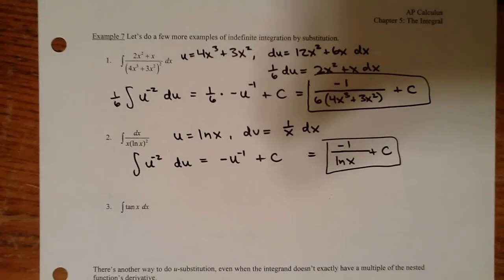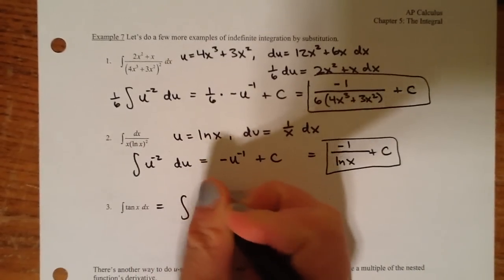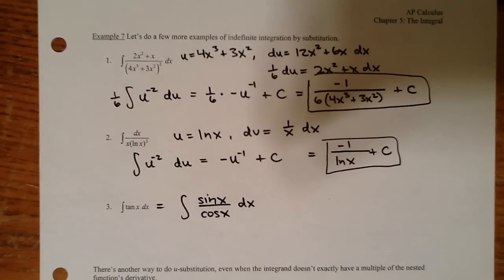So the next one's a little weird — the integral of tangent. It seems like the only option would be tangent, but tangent's derivative is secant squared, and that's not in there anywhere. Maybe think for a second about how you could possibly rewrite tangent to give way to a u-substitution. If you thought sine over cosine, you are correct. So we do a quick rewrite. Then the problem becomes: I could use sine, whose derivative is cosine, or I could use cosine, whose derivative is negative sine. What we have to use is the one that's in the denominator.